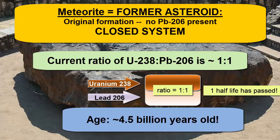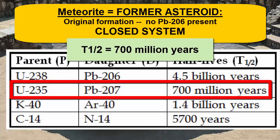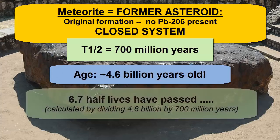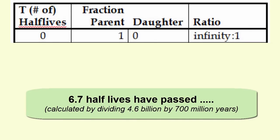Of course, in the lab we get a lot more precise. What if we used uranium-235 and lead-207 to date the same meteorite? What would we find as our ratio? Remember, the half-life for uranium-235 to lead-207 is 700 million years. For something that is 4.6 billion years old, that means it would have passed through 6.7 half-lives. Let's look at what that means for the ratio.